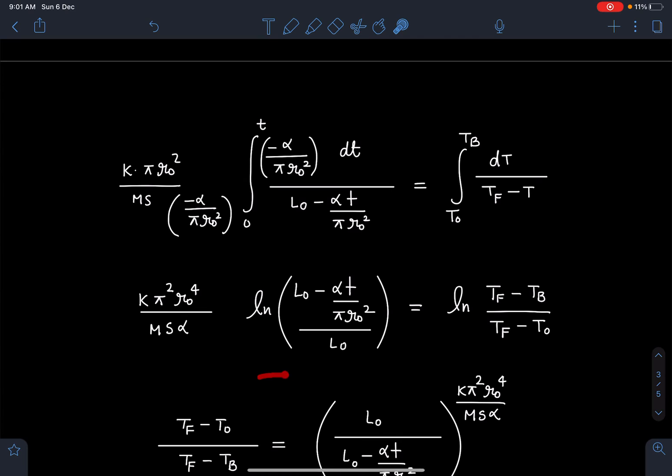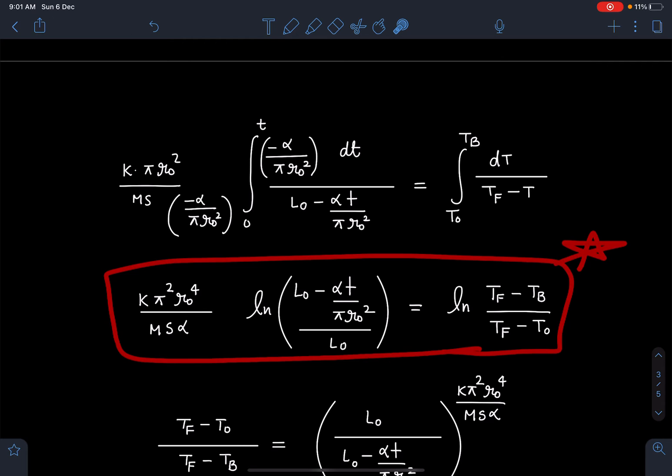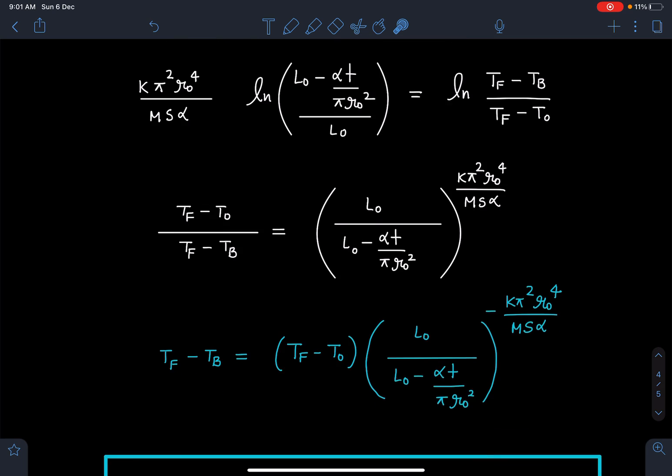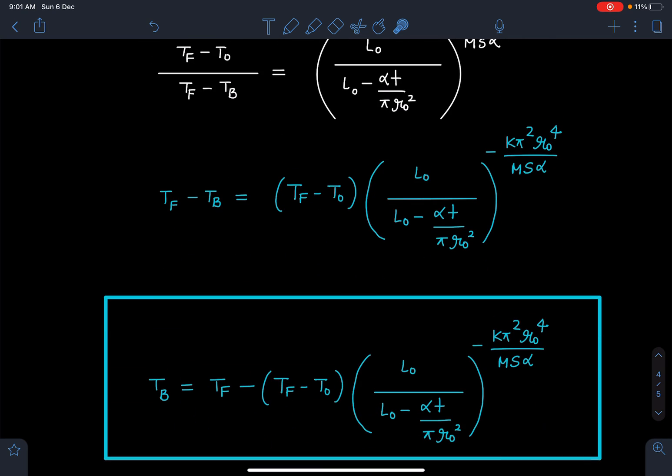Both terms are going to become ln. I am not explaining this mathematical part, I think most of you will be okay with this. When I simplify I am going to get this temperature of block as Tb = Tf - (Tf - T₀) times L₀/(L₀ - αt/πr₀²) to the power minus kπ²r₀⁴/Msα.